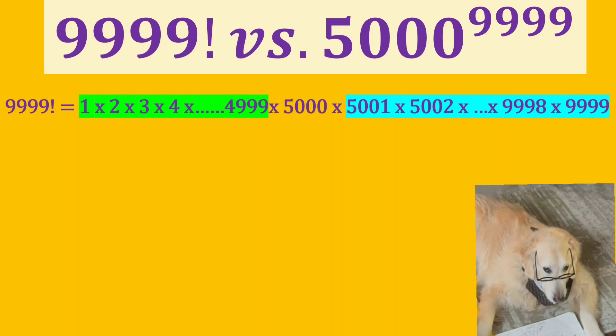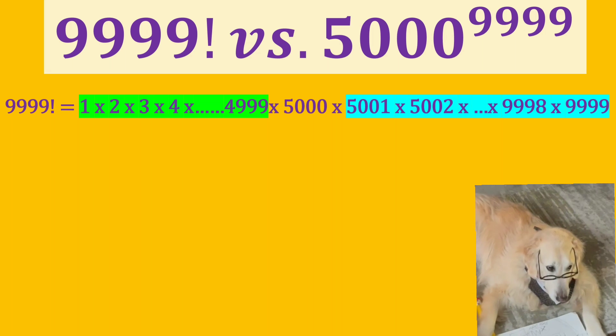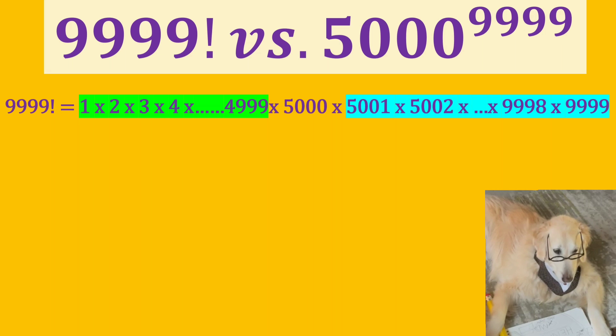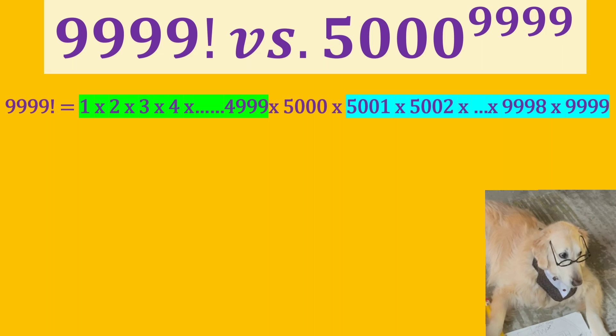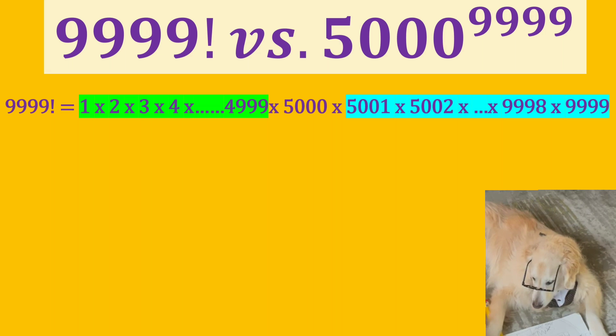Let's look at 9999 factorial this time. As you can see, we separated into three sections. The first part is from 1 to 4999 and it is highlighted with green. And the second part is only 5000. And the third part is from 5001 to 9999 and it is highlighted with blue.